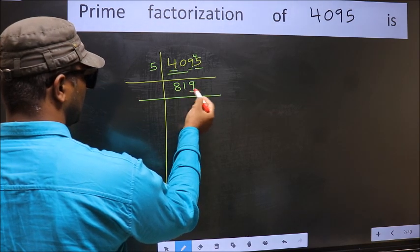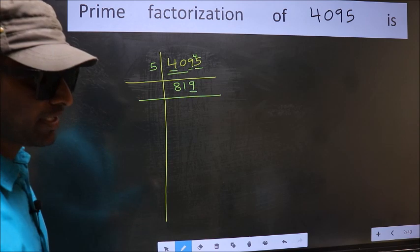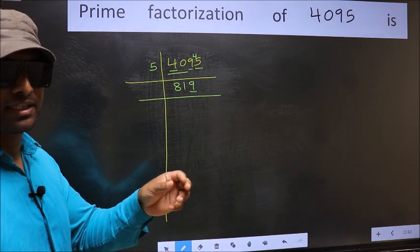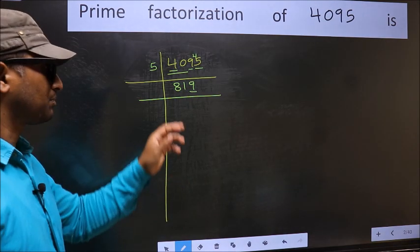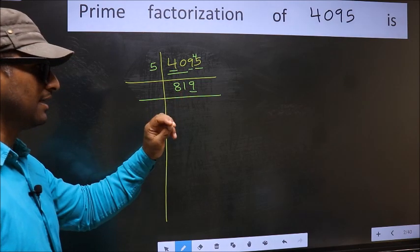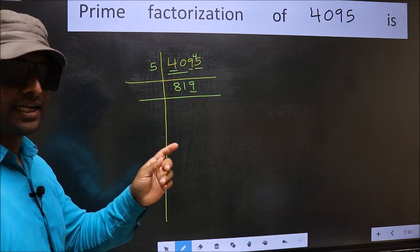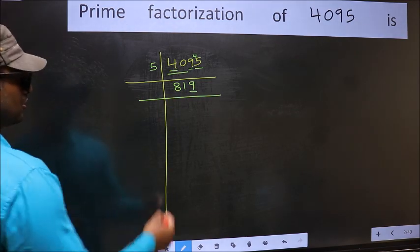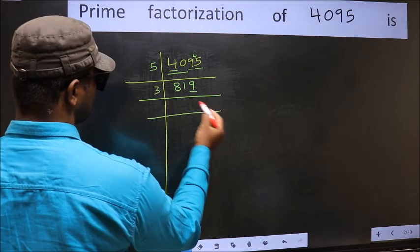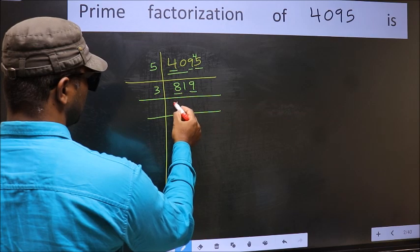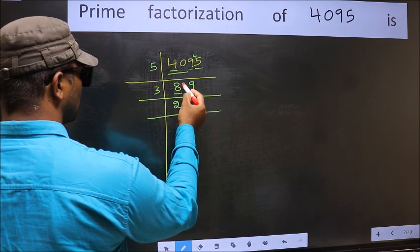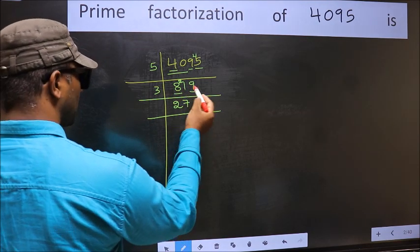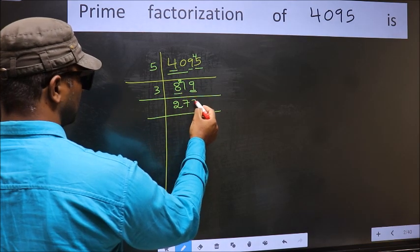The last digit is 9, not even, so not divisible by 2. Next prime number is 3. To check divisibility by 3, we add the digits: 8 plus 1 plus 9 equals 18, and 18 is divisible by 3, so this number is also divisible by 3. Take 3. First number 8: a number close to 8 in the 3 table is 6, so 8 minus 6 is 2, carry forward 2. 21: when do we get 21 in the 3 table? 3 sevens are 21. The other number 9: 3 threes are 9.